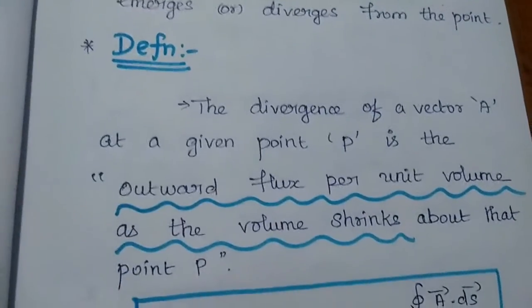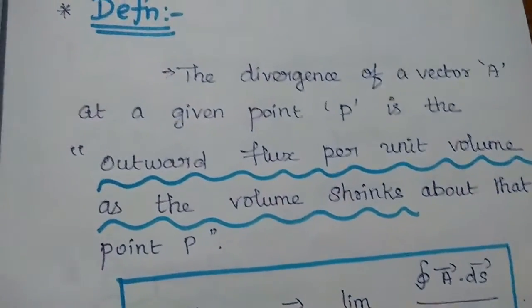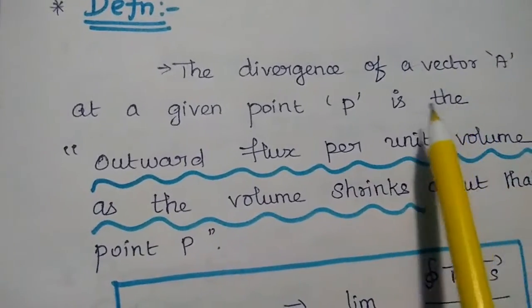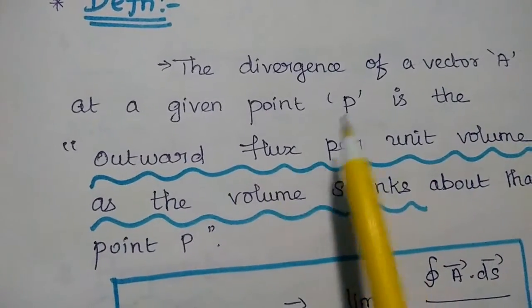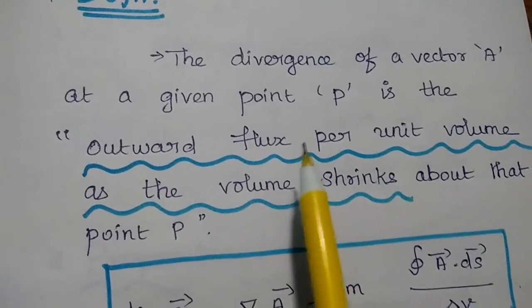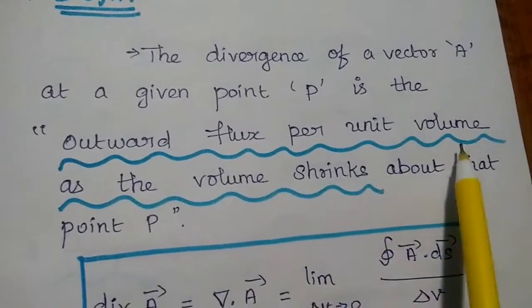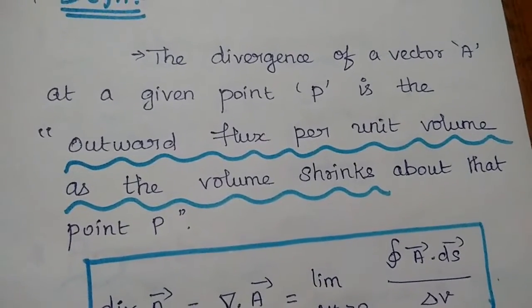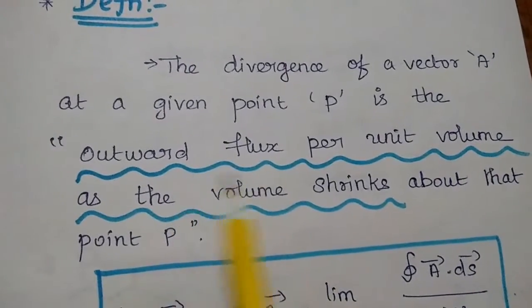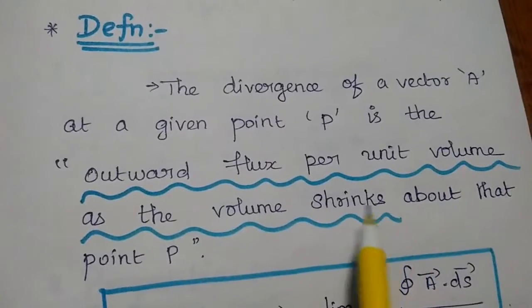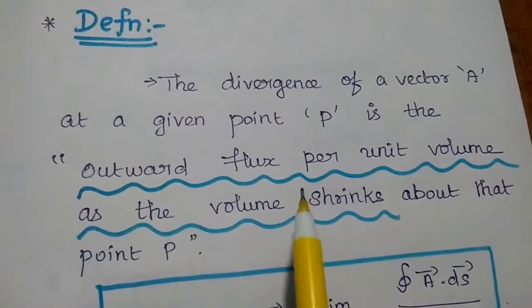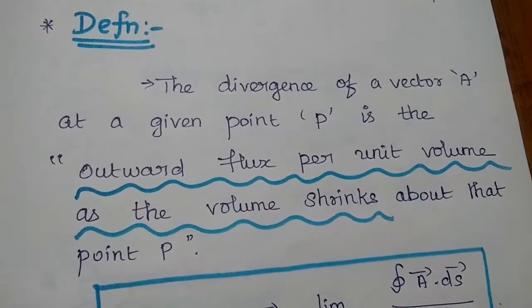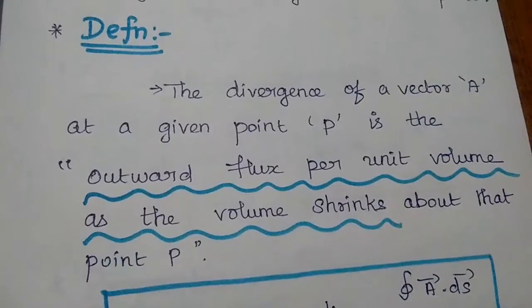Here is the definition of the divergence of a vector field. The divergence of your vector at a given point P is the outward flux per unit volume as the volume shrinks about the point P. This is the important point for the divergence — divergence represents outward flux per unit volume as the volume shrinks.